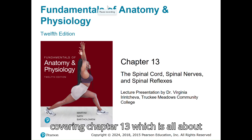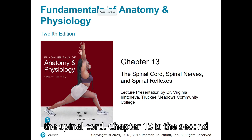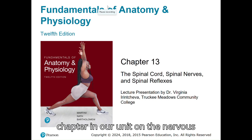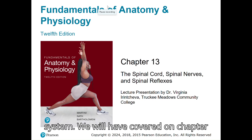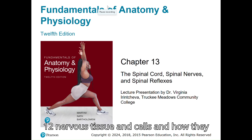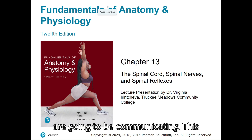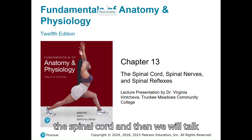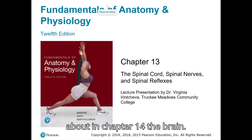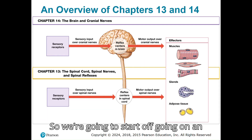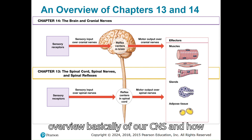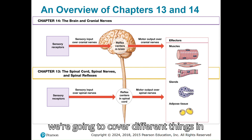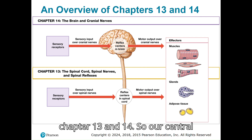In today's lecture, we're going to be covering Chapter 13, which is all about the spinal cord. Chapter 13 is the second chapter in our unit on the nervous system. We will have covered in Chapter 12 nervous tissue and cells and how they are going to be communicating. This chapter we're going to continue on with the spinal cord, and then we will talk about in Chapter 14 the brain. So we're going to start off with an overview of our CNS and how we're going to cover different things in chapters 13 and 14.